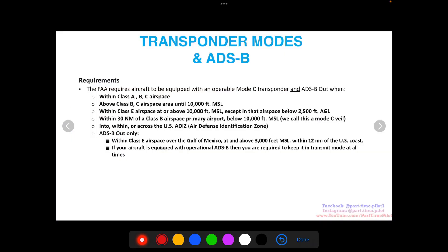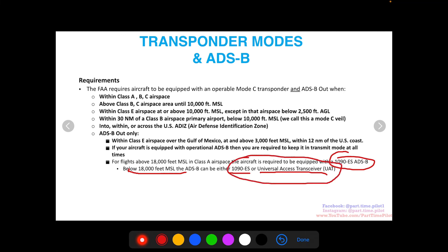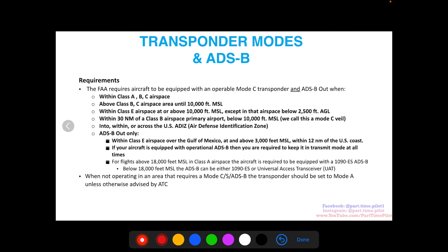If your aircraft is equipped with operational ADS-B, you are required to keep it in transmit mode at all times. For flights above 18,000 feet in Class A airspace, the aircraft is required to be equipped with a 1090 ES ADS-B. If you're flying below 18,000 feet, you can have either 1090 ES or a universal access transceiver (UAT). If you're building your own aircraft, go with 1090 ES to be safe.